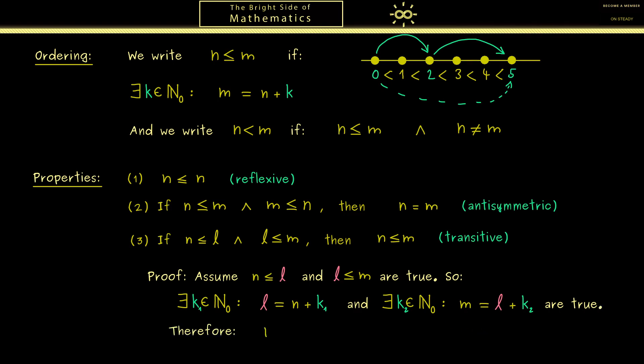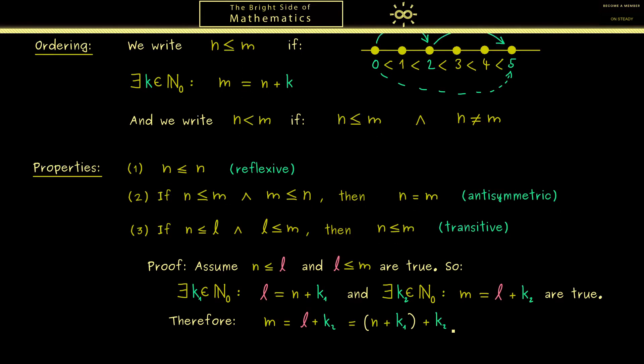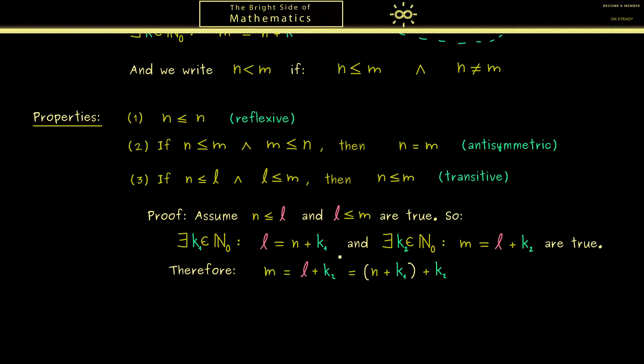Therefore we can put both things together and say that m has to be l plus k₂, but then we can put our knowledge of l in here. So we get this, and there you see we can use our associativity here. Then with the parentheses on the right hand side we can just define a new number, so let's call k₁ plus k₂ just k.